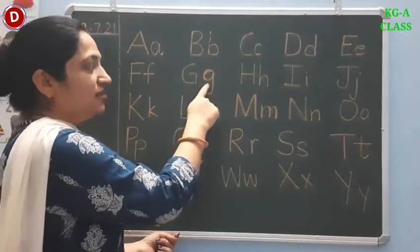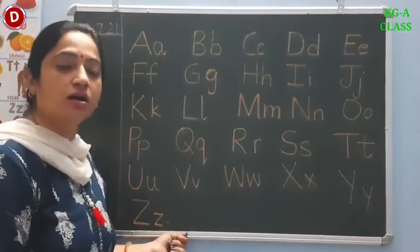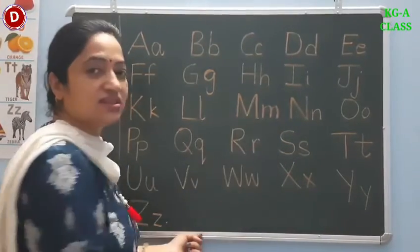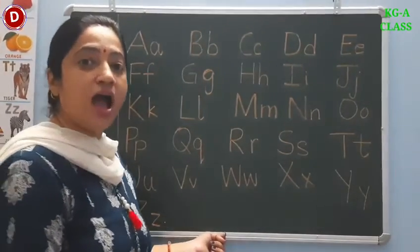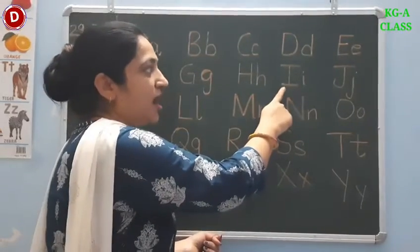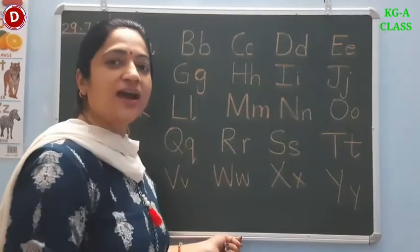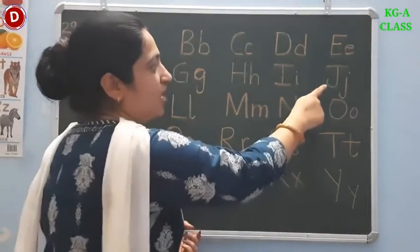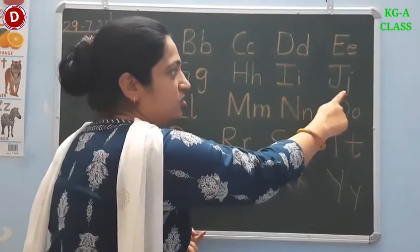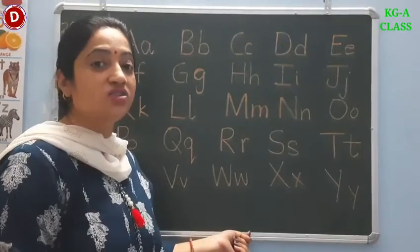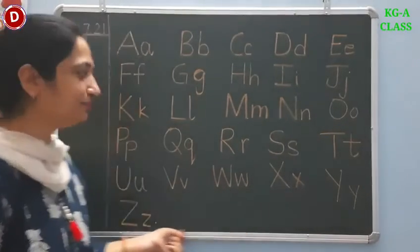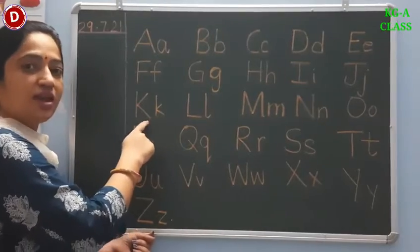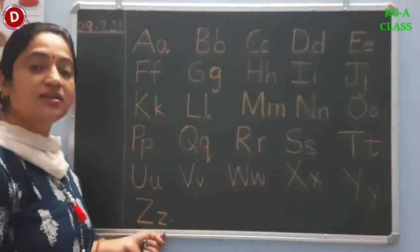This is capital F, small F. F says 'f' as in fish. This is capital G and this is small G. G says 'guh' as in grapes. Children, this is capital H and this is small H. H says 'h' as in house. Now comes I. This is capital I, small I. I says 'i' as in ink pot. Now comes J. This is capital J and this is small J. J says 'j' as in jam and jelly. Children, this is capital K and this is small K. The sound of K is 'k' as in kite.